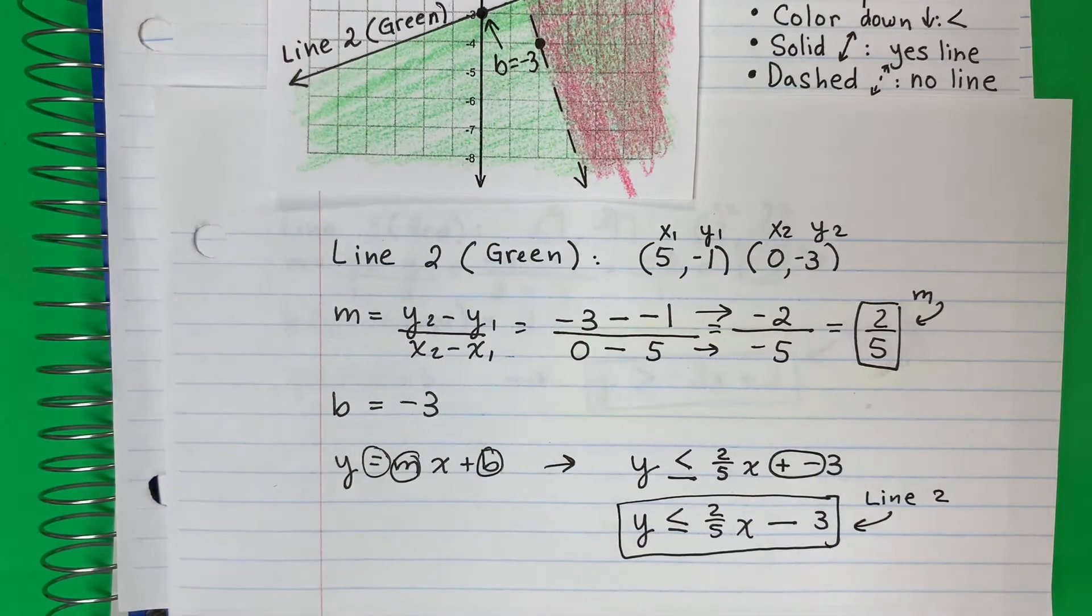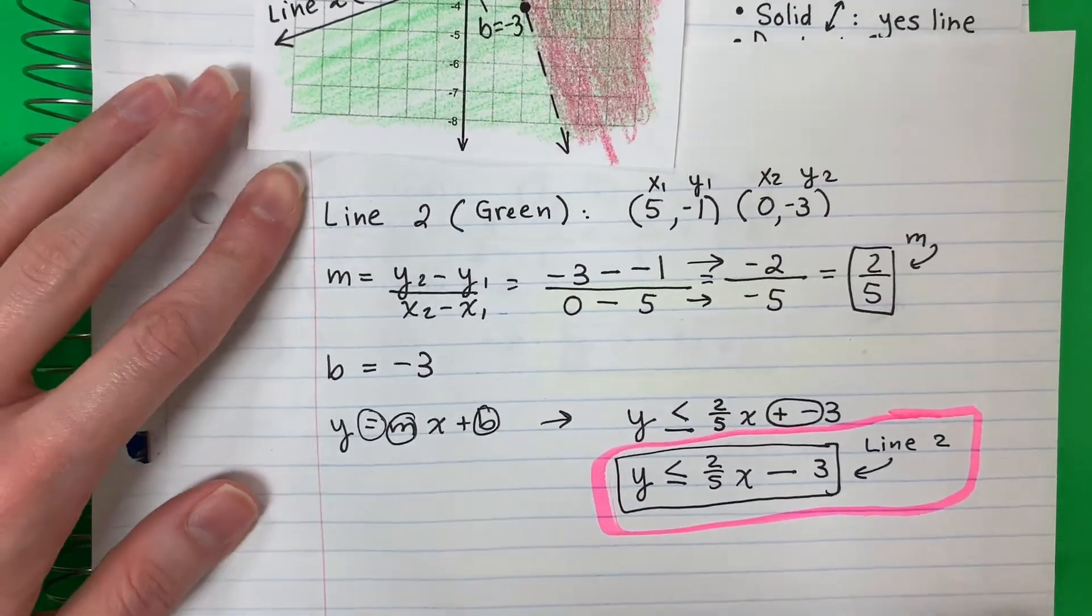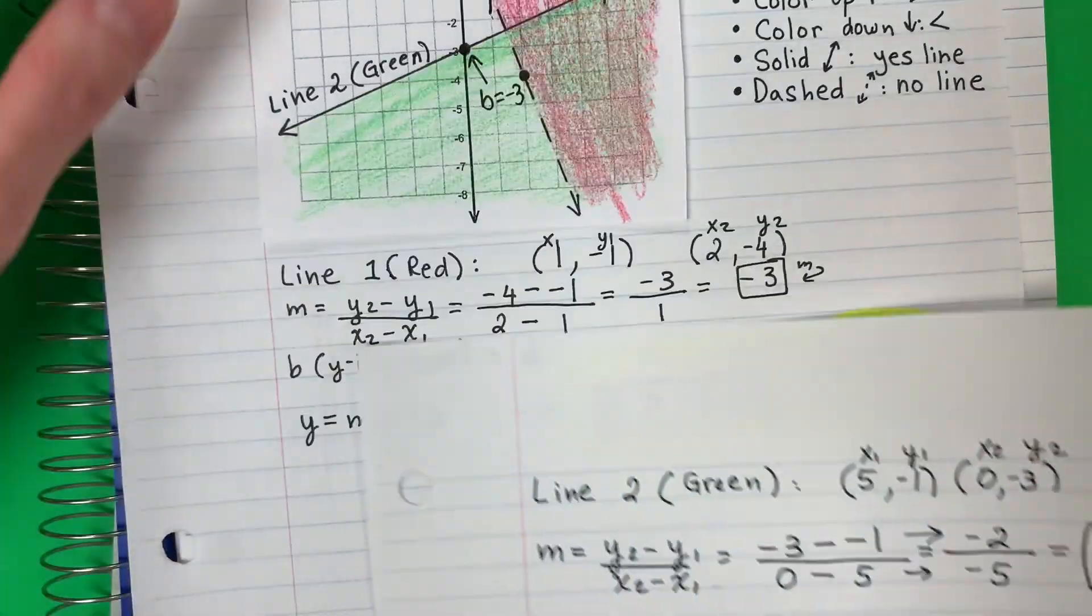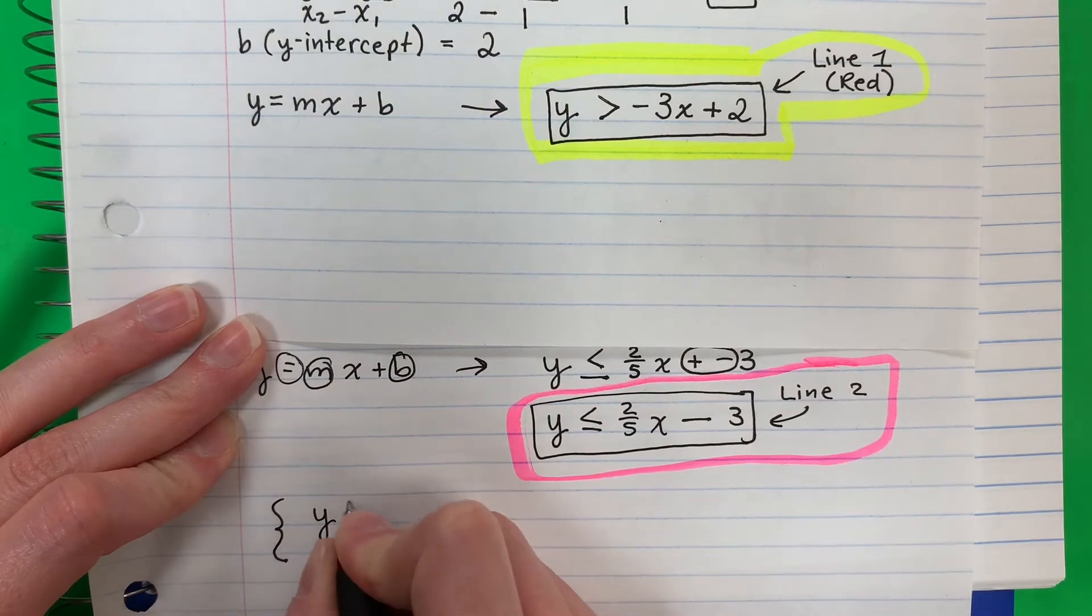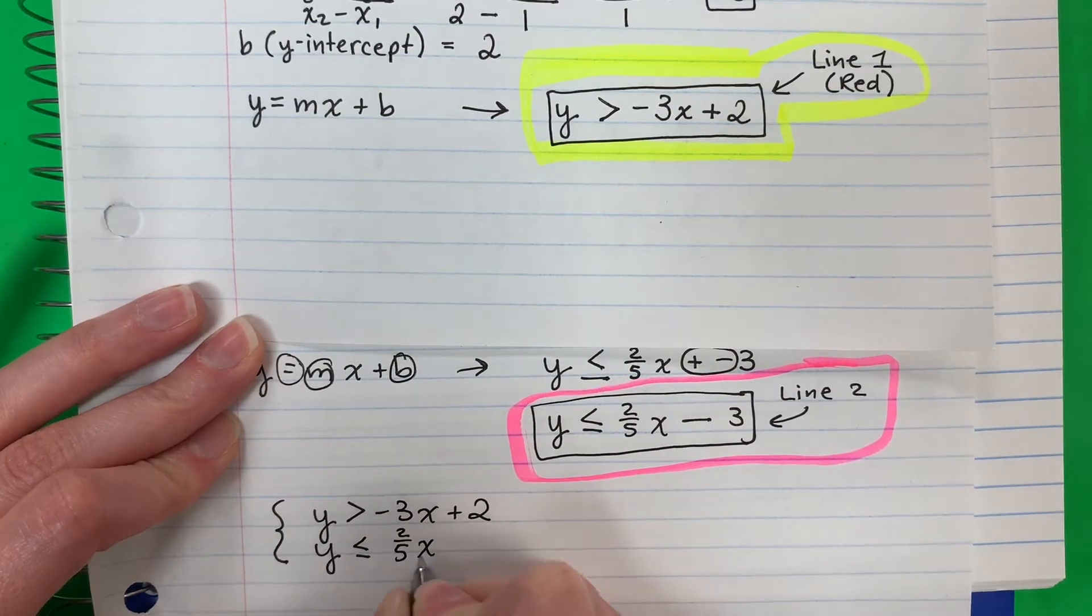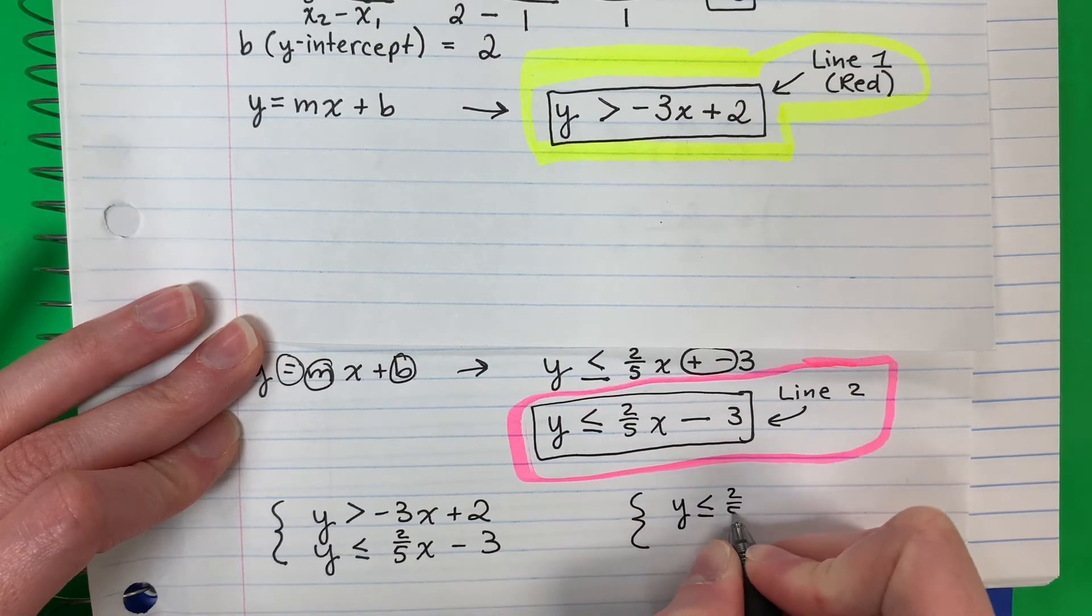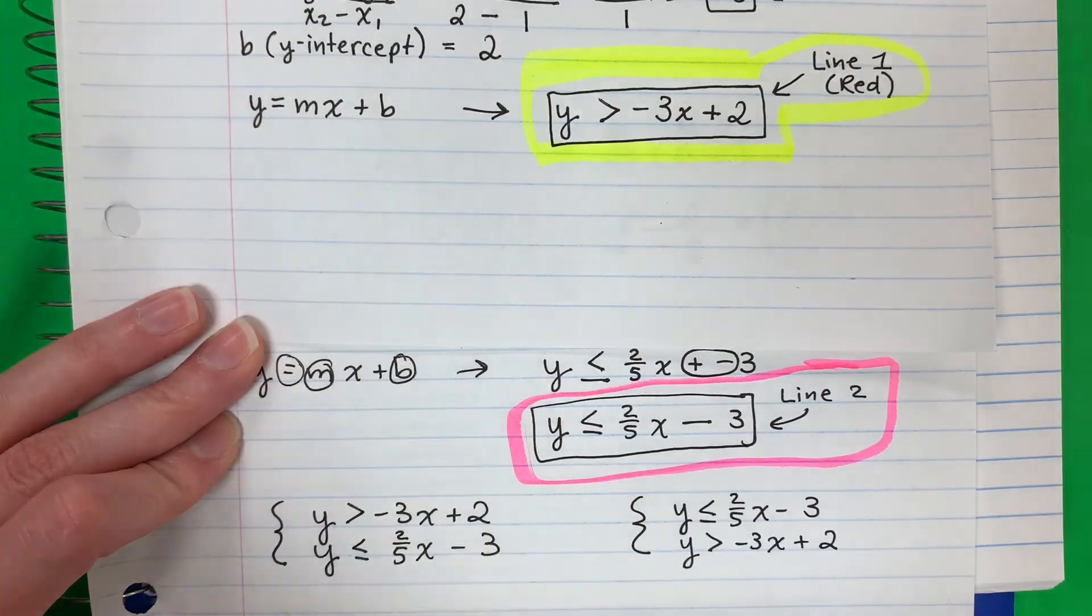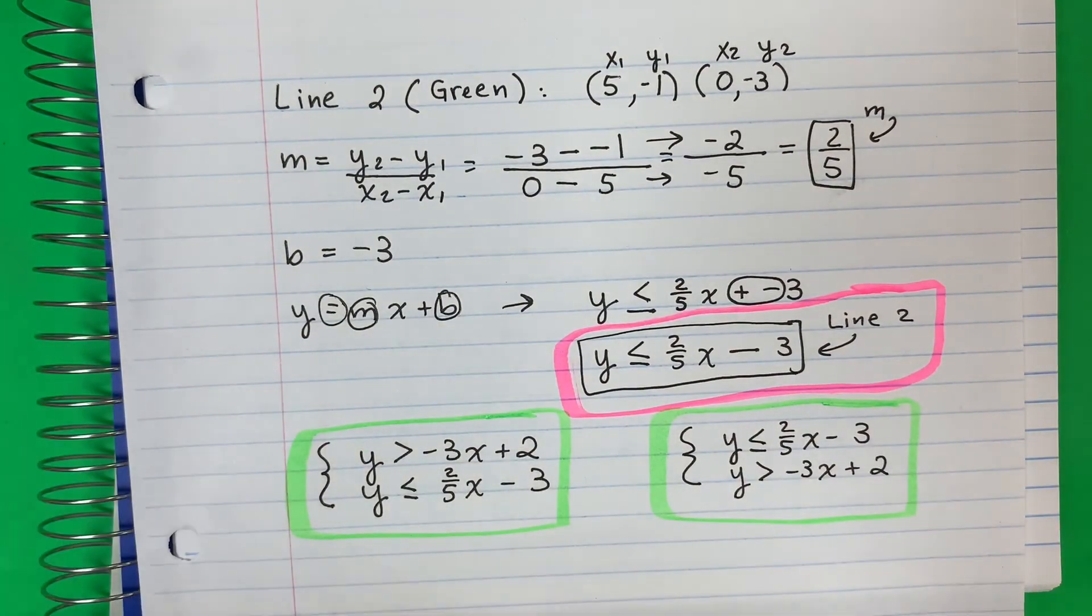I'm going to color that too. So I have two answers. To write it in a system, I'm going to do a little brace here. And I'm going to put my first line, which is y is greater than negative 3x plus 2. And then this one, y is less than or equal to 2 fifths x minus 3. Now it doesn't matter which order you put them. So whatever shows up on the test, it doesn't matter which one's the order. So my final answer is going to be this one or this one, but they're both good.